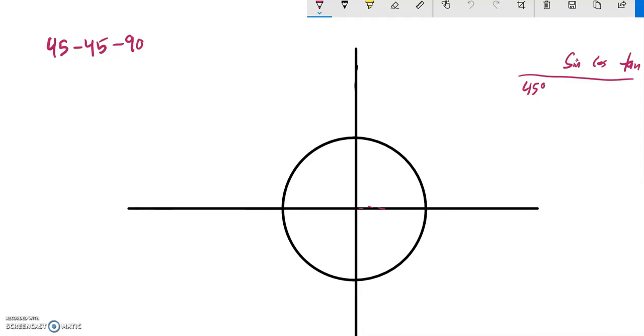So let's use what we know about 45-45-90 triangles to get at the sine, cosine, and tangent angle values of larger angles, larger than 45.